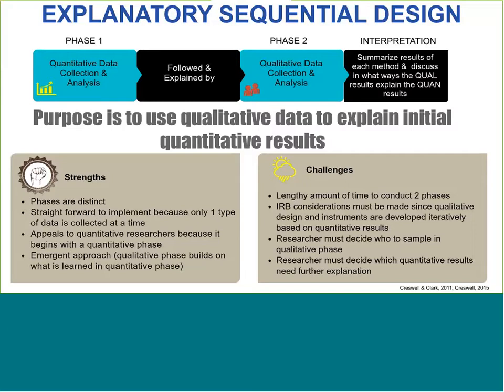The next basic mixed methods design is the explanatory sequential design. In this design, quantitative data is collected and analyzed first, followed by qualitative data collection and analysis, and then the results of both are summarized and triangulated. This design is most useful when a researcher wants to understand the mechanisms or reasons behind trends or results found from quantitative data analysis — you basically want to use your qualitative data to explain your quantitative results. This design should be used when a researcher knows the constructs and variables that need to be explored and has access to quantitative measures and instruments. The researcher also has to be able to approach participants again for the qualitative data collection phase, and it's useful when new questions emerge from quantitative data that can't be answered quantitatively.